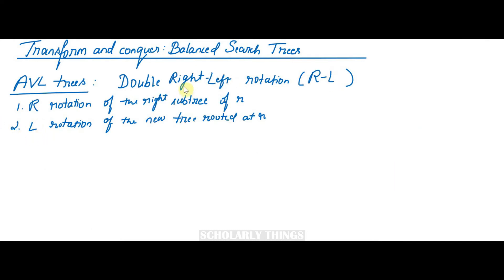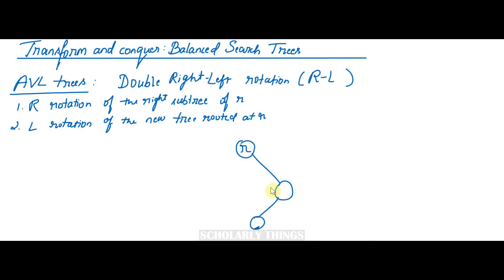Double right-left rotation (RL rotation) also has two steps: first a right rotation of the right subtree of R, then a left rotation of the new tree rooted at R. It is performed when a new node is added to the left subtree of the right child of the root, which previously had a balance factor of -1. For example, if the root has a right child and we add a left child to that right child, the balance gets disturbed and we perform RL rotation.